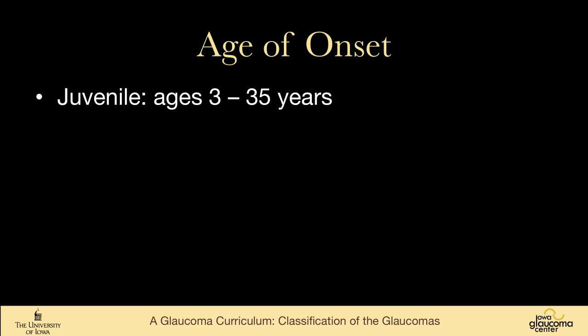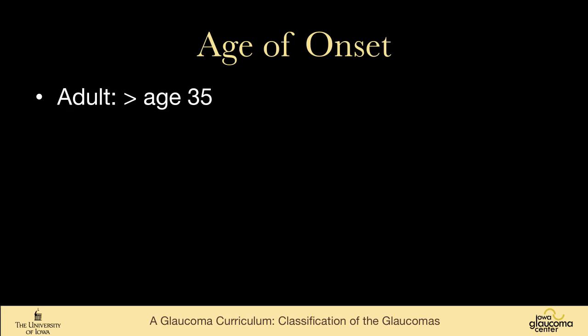Juvenile glaucoma spans from three to 35 or 40 years — it varies from source to source. Adult glaucoma is over age 35. Juvenile glaucoma is notable because it's uncommon for someone to have glaucoma in that age range.